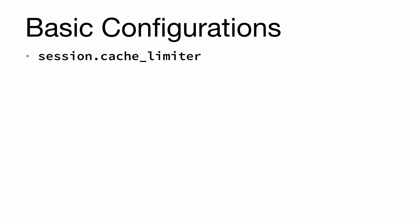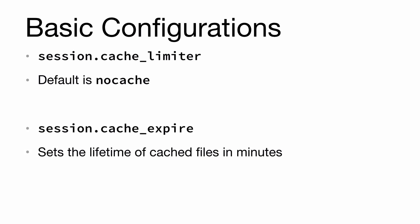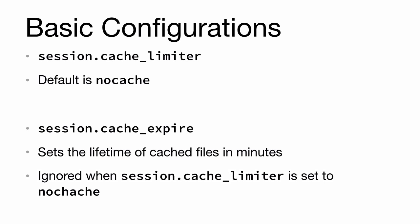Next we have session.cache_limiter, which defines which cache control headers are sent with the page. This prevents clients or proxies from caching sessions and is very good for security purposes. The default is no-cache and you should leave it that way. We also have session.cache_expire, which sets the lifetime of cached files in minutes. This is ignored when cache_limiter is set to no-cache, so if you change the cache_limiter to something else, then you'll need to use cache_expire.